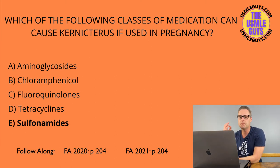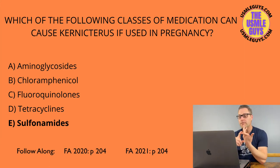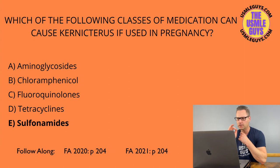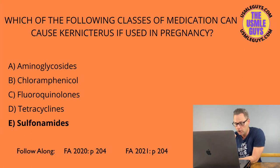The correct answer is E — sulfonamides. It's critical to know which drugs can interfere with proper fetal development. Toxic antimicrobials for the fetus: aminoglycosides cause ototoxicity; sulfonamides cause kernicterus; fluoroquinolones hit the bones and cause cartilage damage; tetracyclines cause tooth discoloration — browning or graying — and inhibit bone growth; clarithromycin is embryotoxic; ribavirin and griseofulvin are teratogenic; and chloramphenicol causes gray baby syndrome.